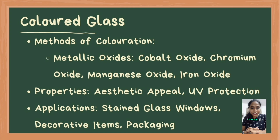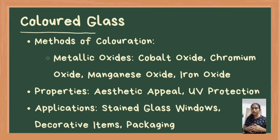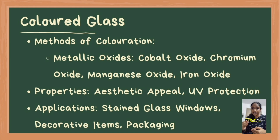Colored glass is produced by adding various metallic oxides to the glass batch, with specific oxides producing different colors: cobalt oxide for blue, chromium oxide for green, manganese oxide for purple or pink, and iron oxide for brown or amber. This glass is often used for its aesthetic appeal in art, architecture, and packaging. Additionally, some colored glasses offer UV protection, absorbing harmful ultraviolet light and protecting contents from light-induced degradation. Applications include stained glass windows, decorative items, and protective packaging for sensitive products.